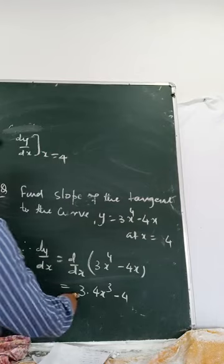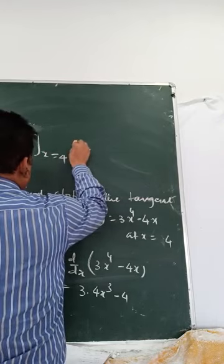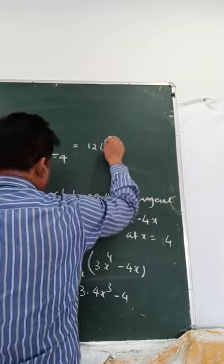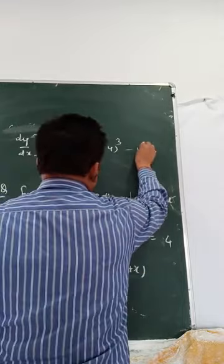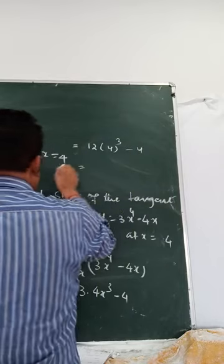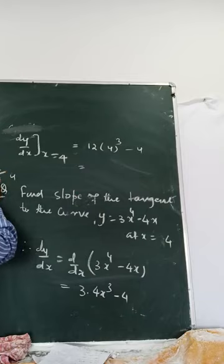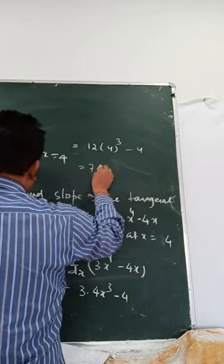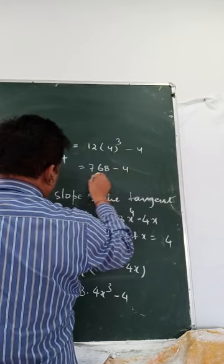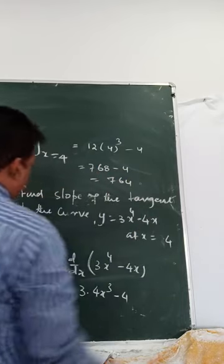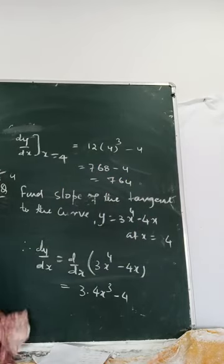Substituting x equals 4: 12 times 4 cubed minus 4 equals 12 times 64 minus 4 equals 768 minus 4, which is 764. So the slope of the tangent is 764.